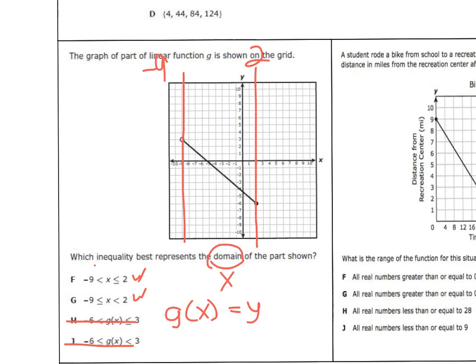Both of these have negative 9 to positive 2. The difference here is these symbols. If we look on the left side we have an open circle and on the right side we have a closed circle. The open circle matches with the just less than symbol, and the closed circle matches with the less than or equal to. So our answer must be F. It's very important to pay attention to the symbols.